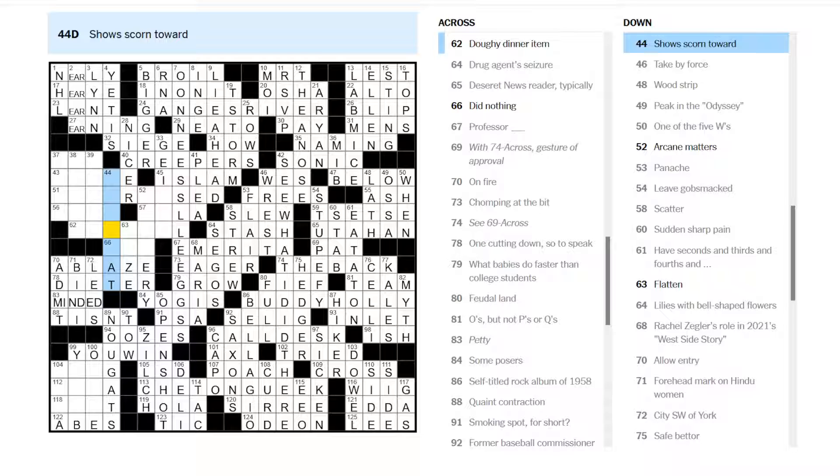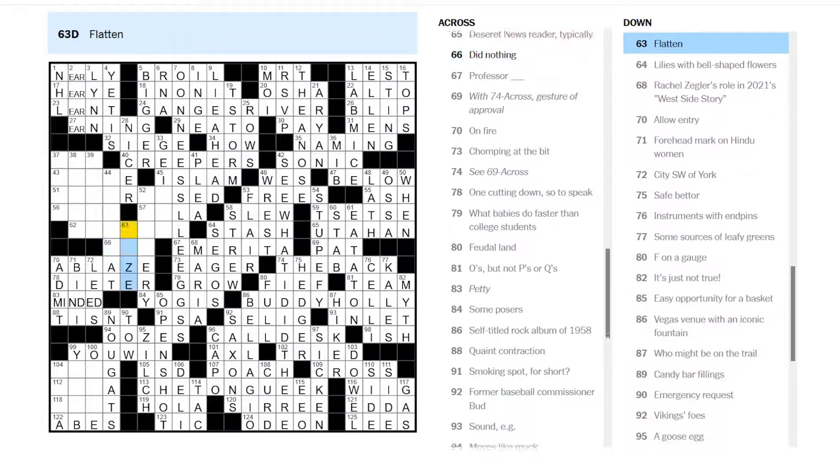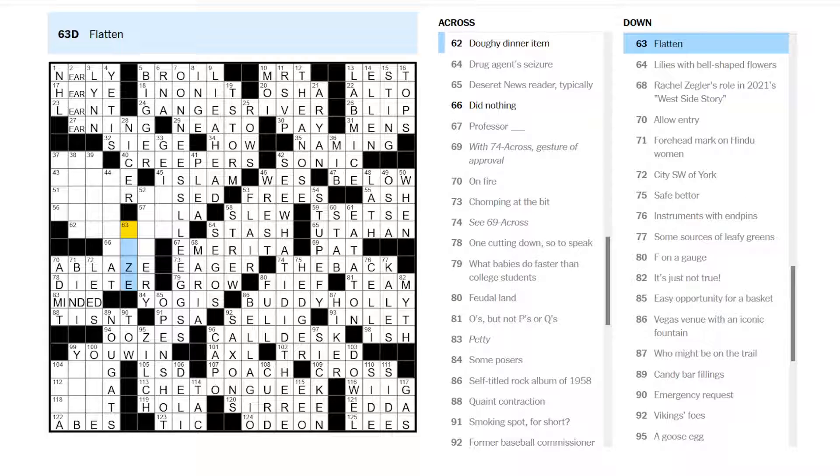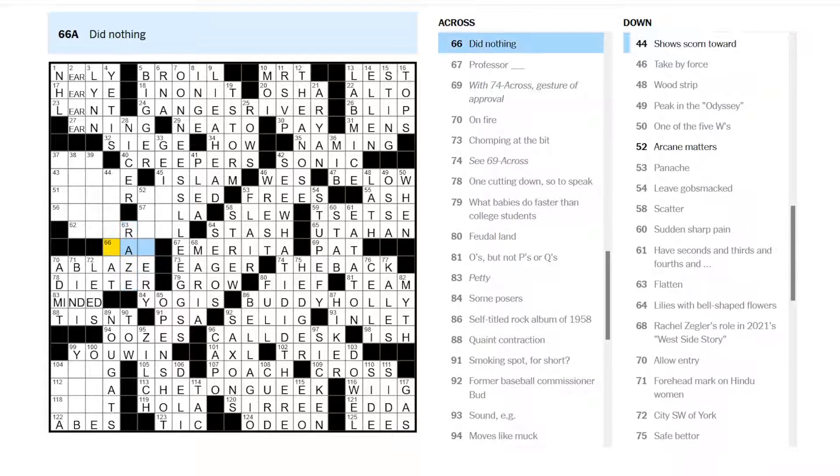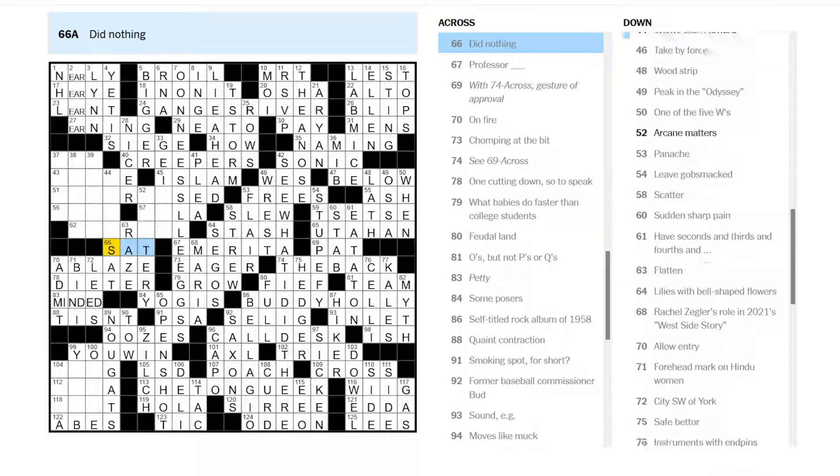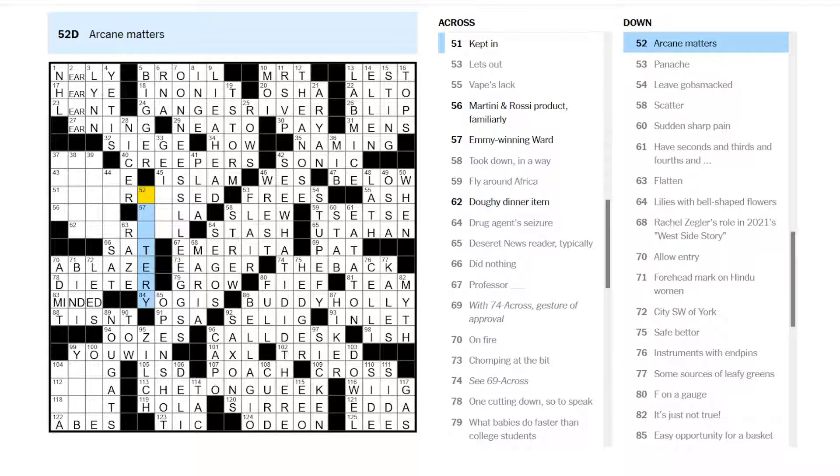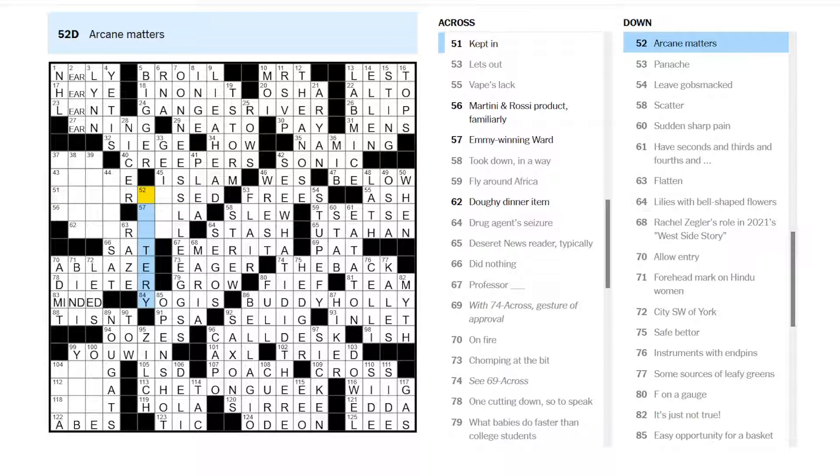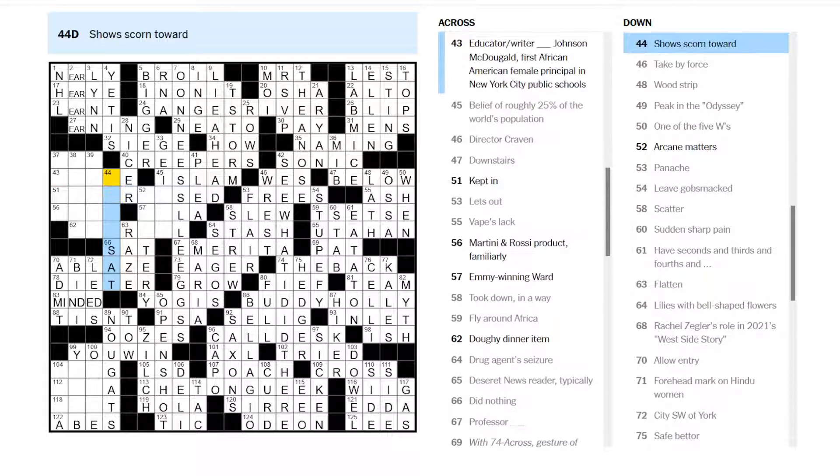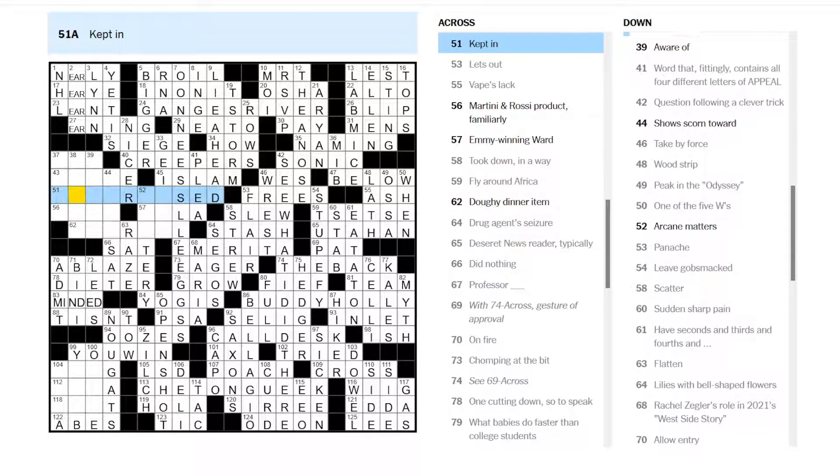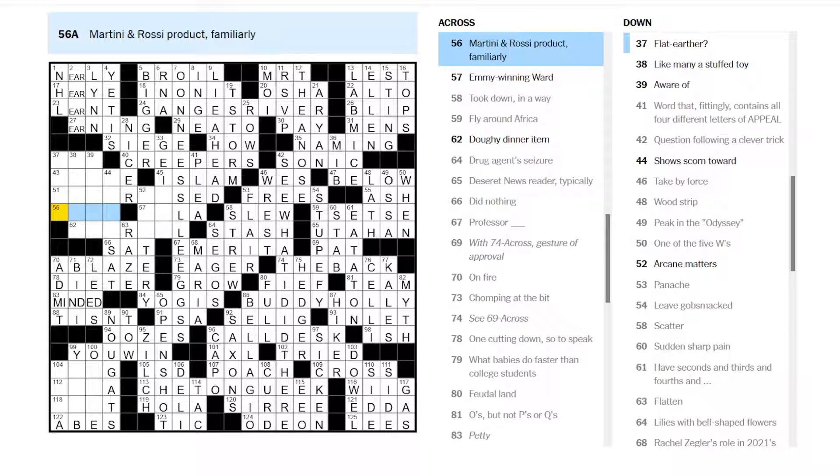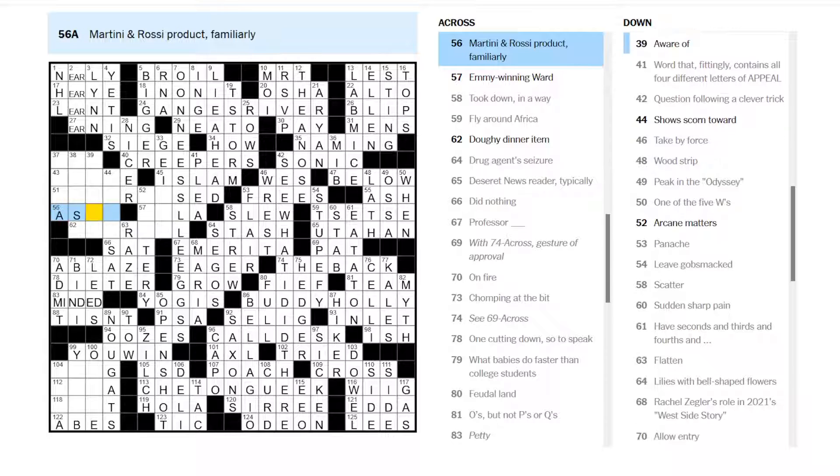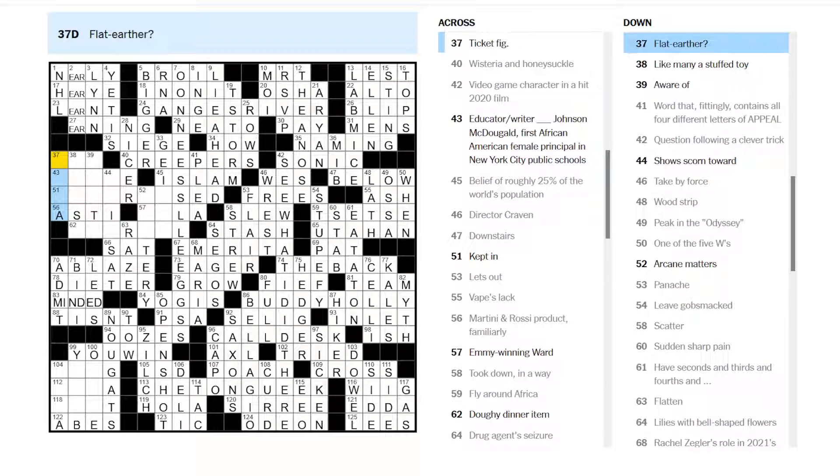Oh, show scorn towards something at. Flatten. With a Z. To raze. Did nothing. Sat, maybe? Kept in. Right. Martini and Rossi product. Famiglioli. Vermouth. Martini and Rossi. Asti, maybe? Asti Spumante. Flat earther.